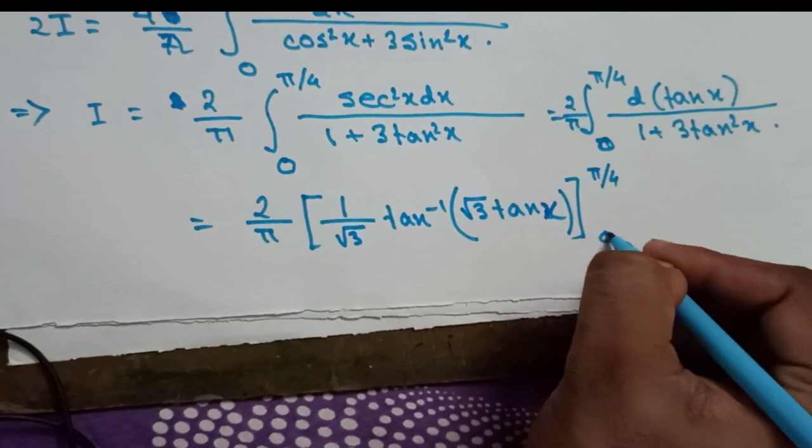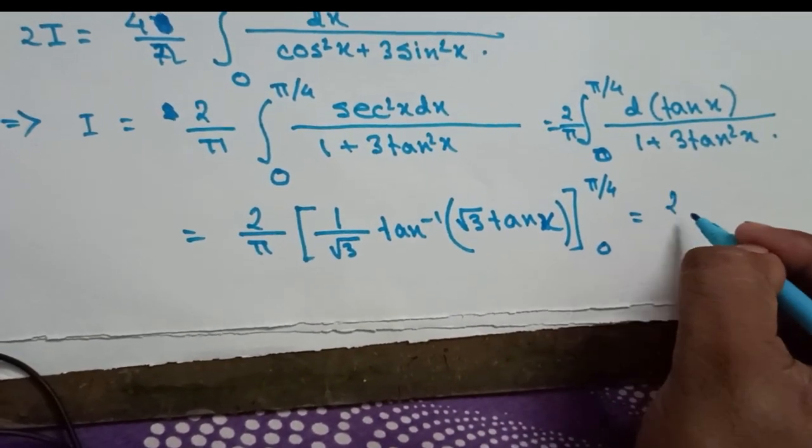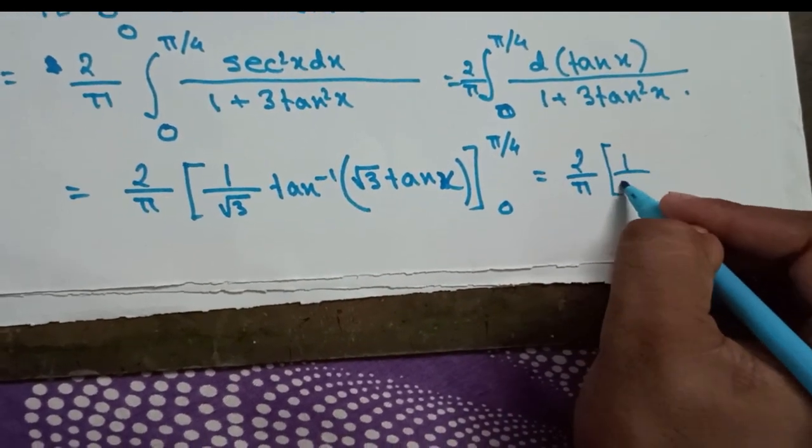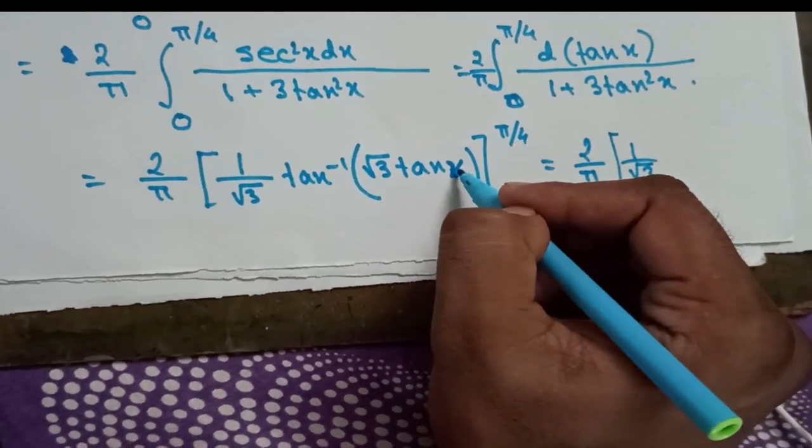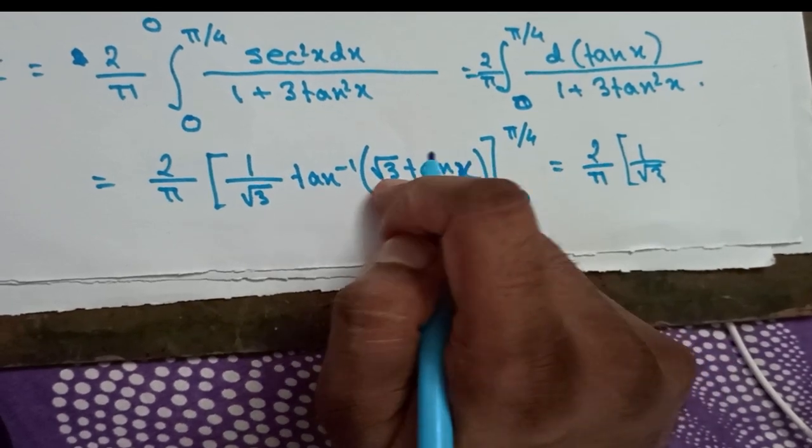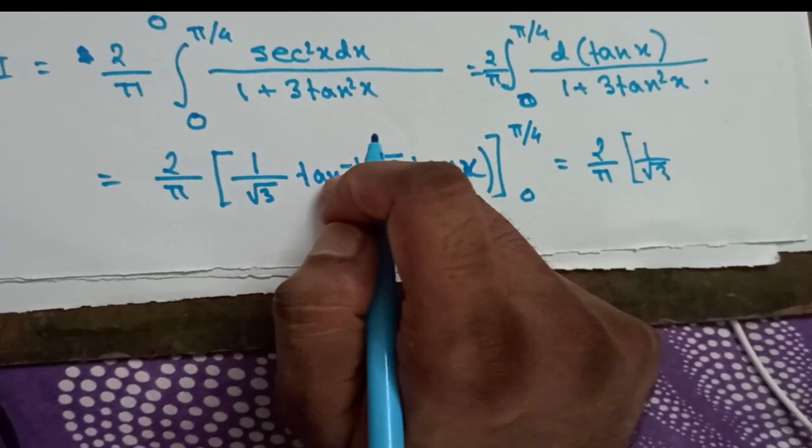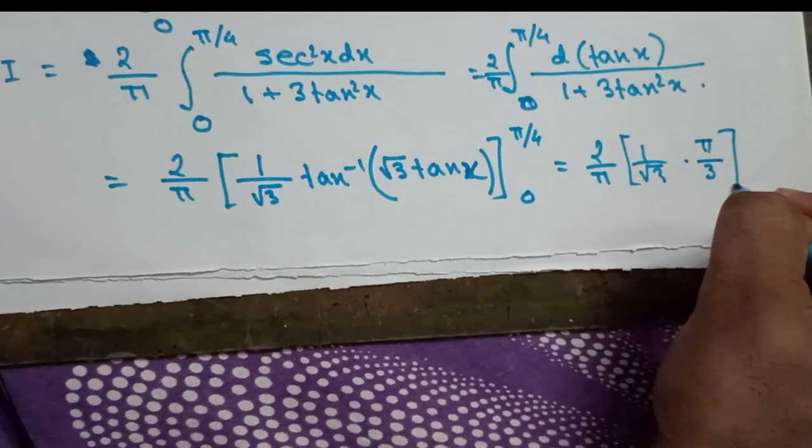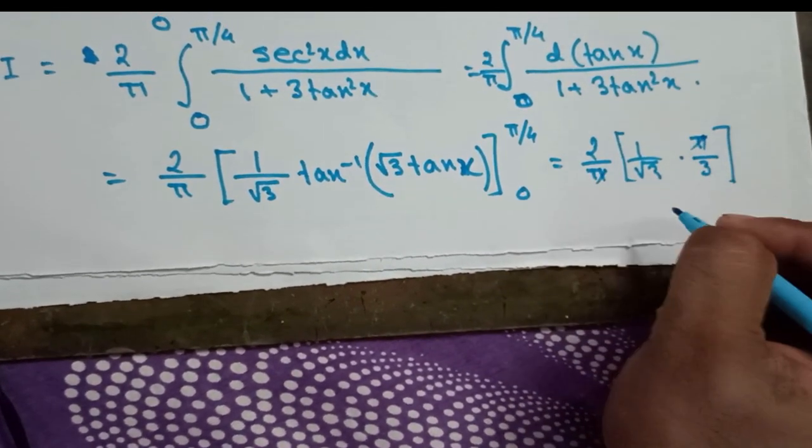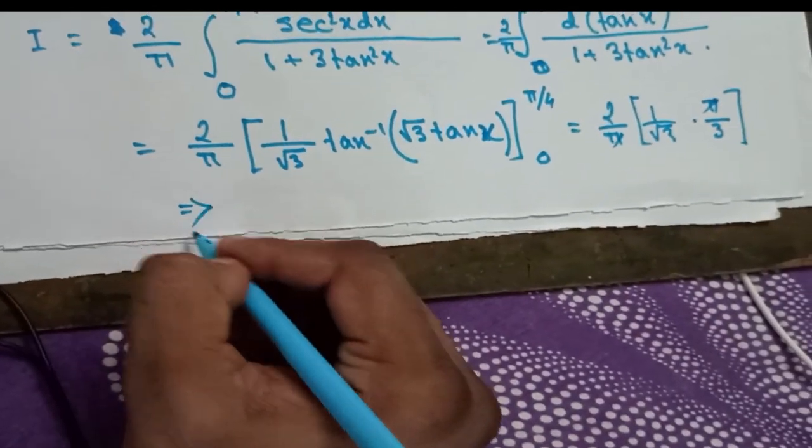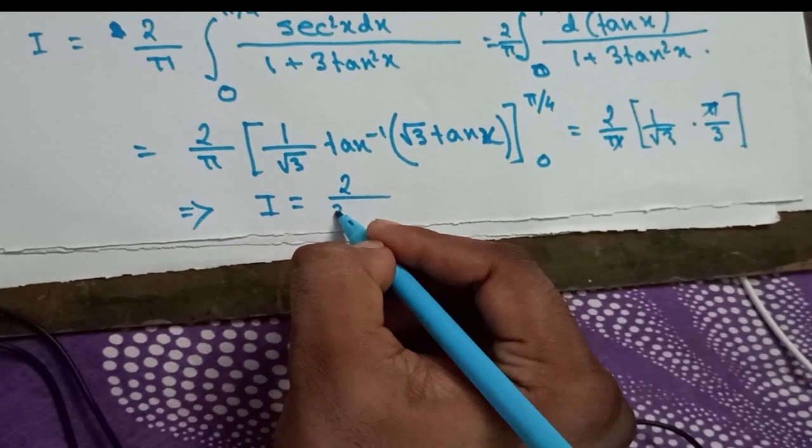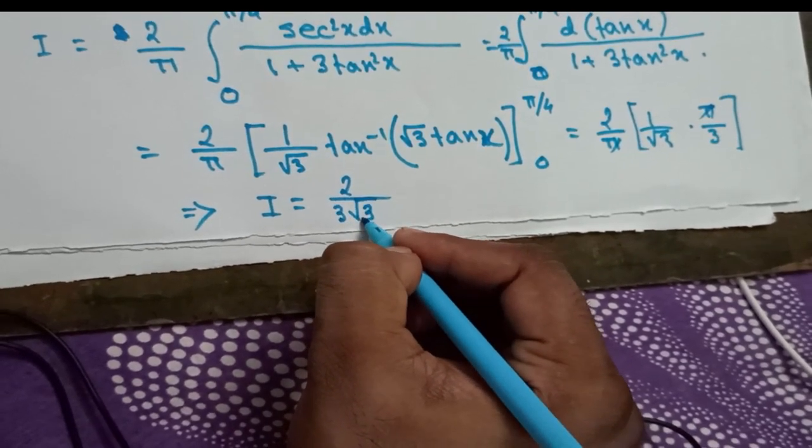Finally it will become 2/π times 1/√3. If we put π/4 here it will be 1, so it will be √3, so tan⁻¹(√3) is nothing but π/3. Therefore this π and this π will cancel out, and I will be 2/(3√3).